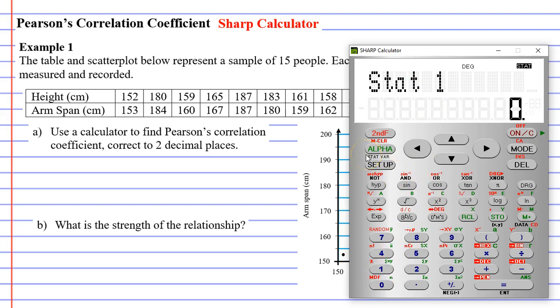Now we need to enter the values. You'll notice that each time we've got to enter two values. So if we've got 152 for our height our arm span is 153. So we're going to type 152 then the STO button which gives us a comma and then the number 153. We now press M+. You'll notice it says data set equals 1 and that's because we've only entered one set of values from this particular column.